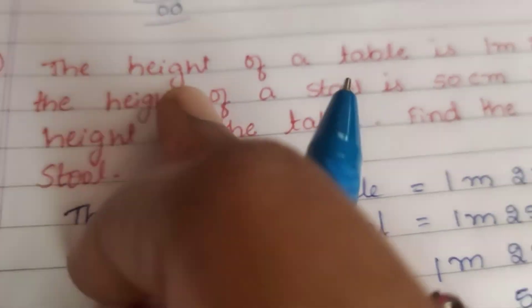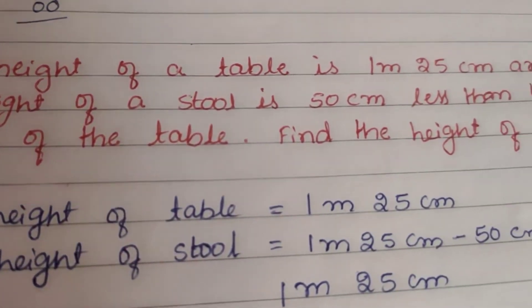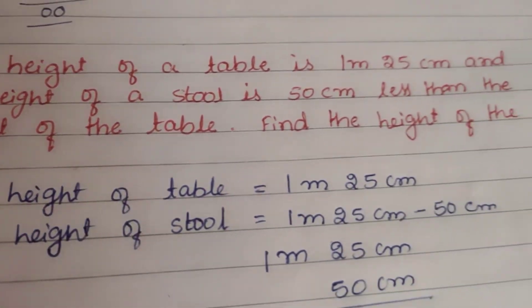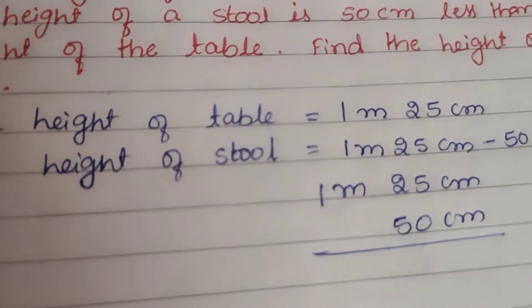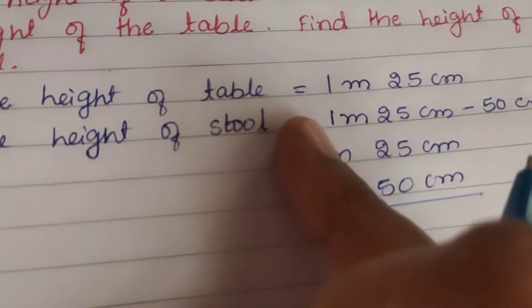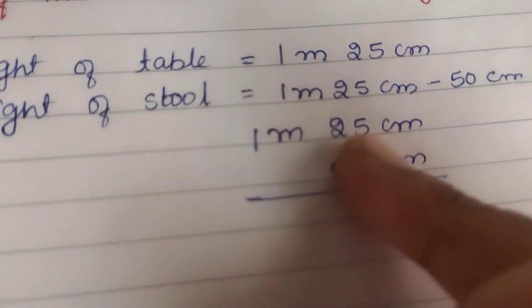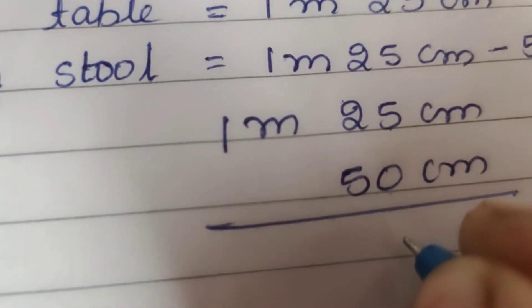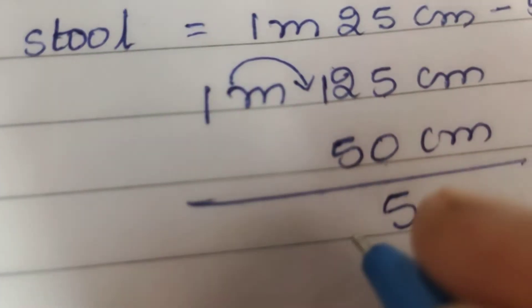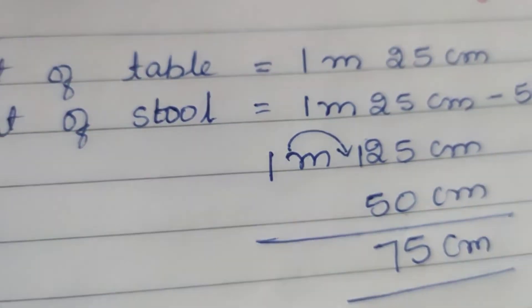Seventh question: The height of a table is 1 metre 25 centimetres and the height of a stool is 50 centimetres less than the height of the table. Find the height of the stool. Height of table is 1 metre 25 centimetres. Height of stool is 1 metre 25 centimetres minus 50 centimetres. 5 minus 0 is 5. We can't subtract 5 from 2, so borrow 1: 12 minus 5 is 7. So the height of the stool is 75 centimetres.